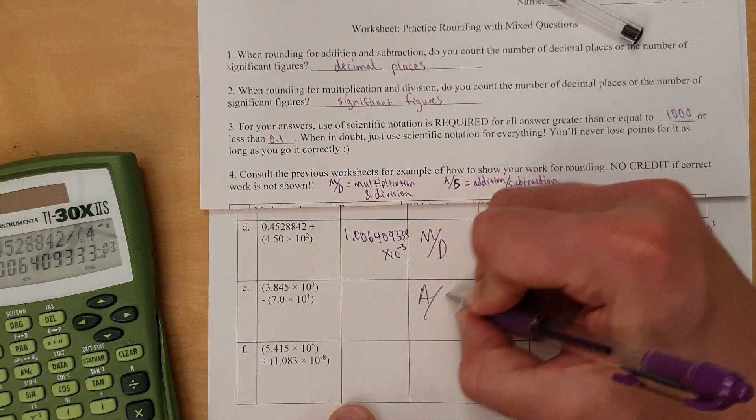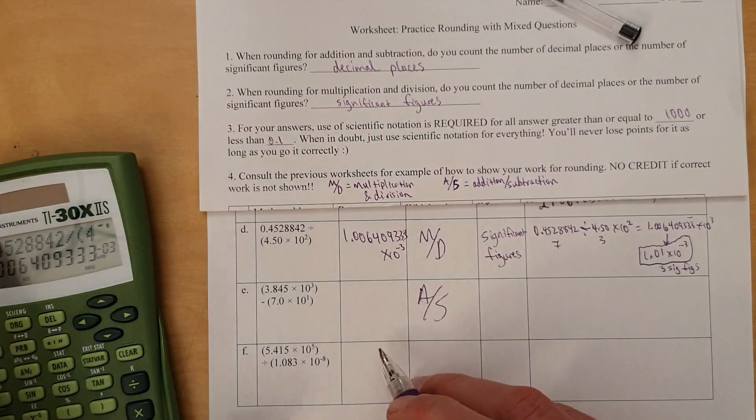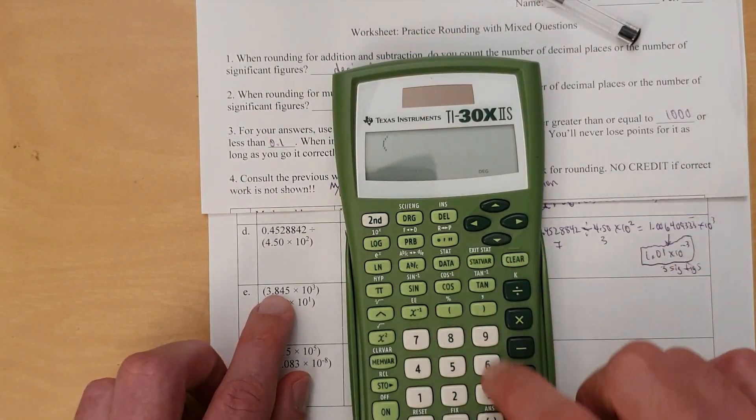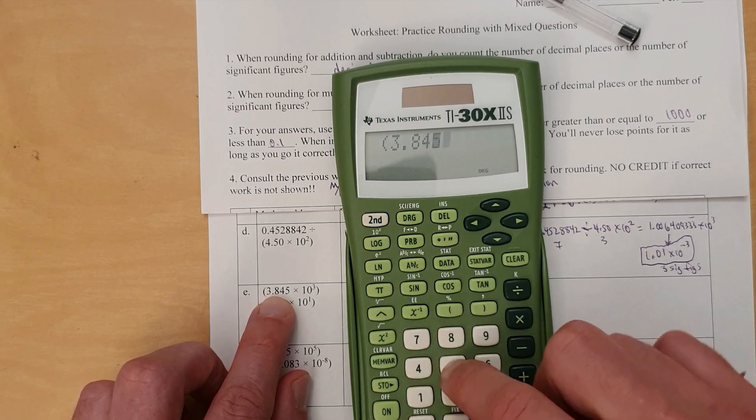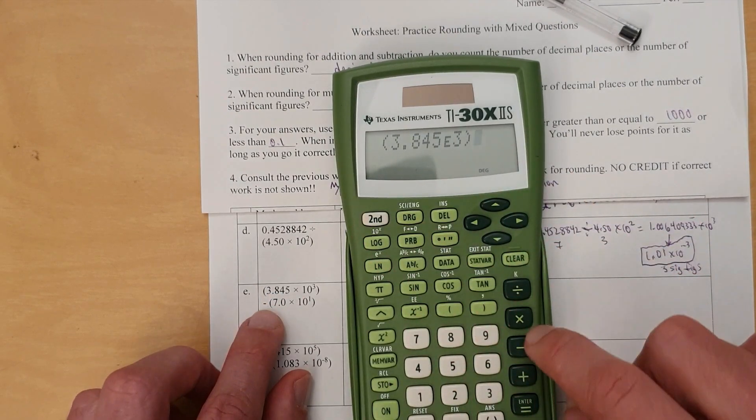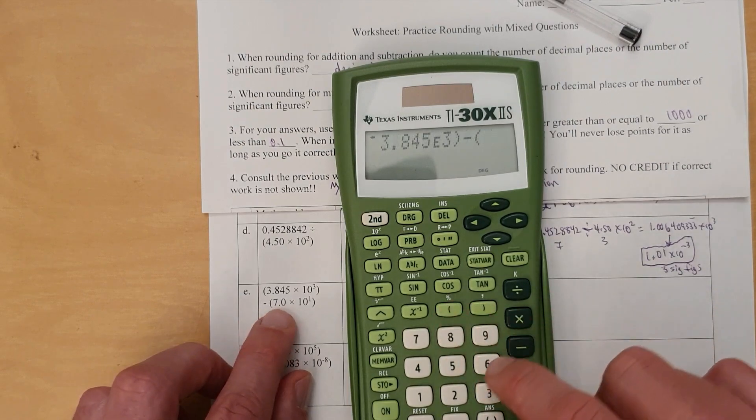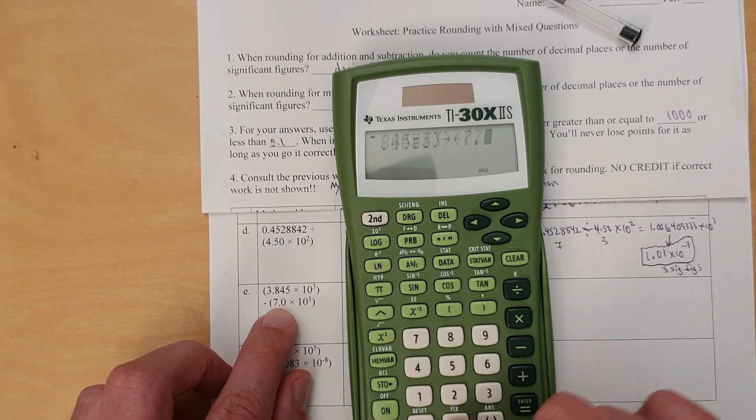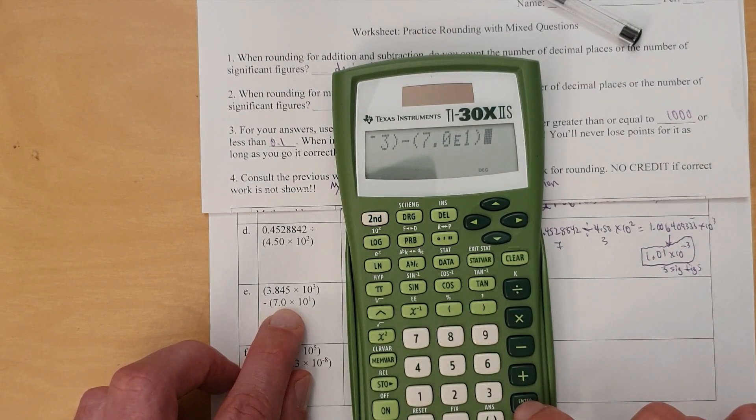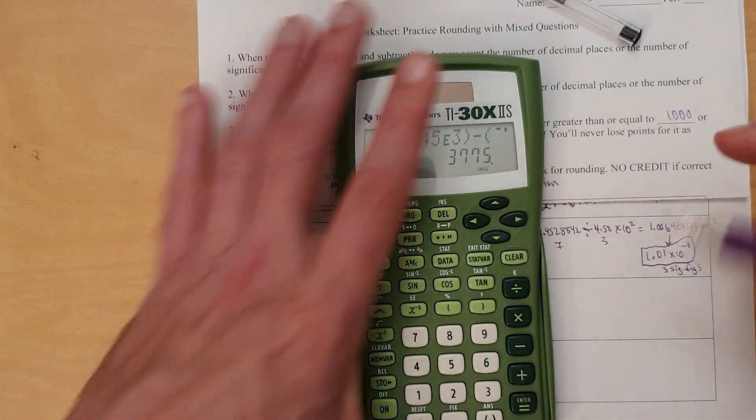Minus. So we got addition, subtraction rules going. We're going to have to stack these up. 3.845 times 10 to the power of 3. Subtract. Open parentheses. This is just 70, but whatever. I'll put it all in there just the same. 7.0 times 10 to the first. Subtract them out. You get that. 3,775.